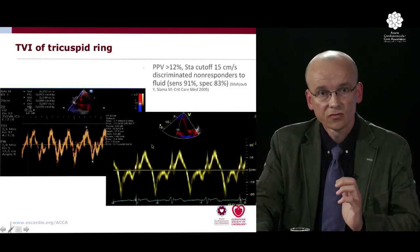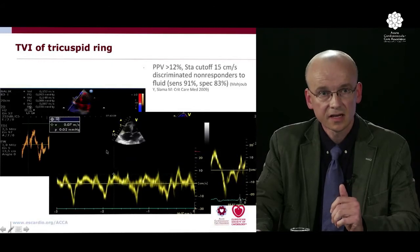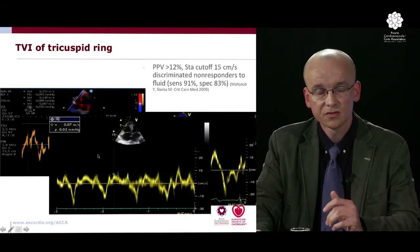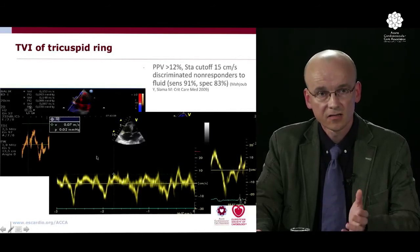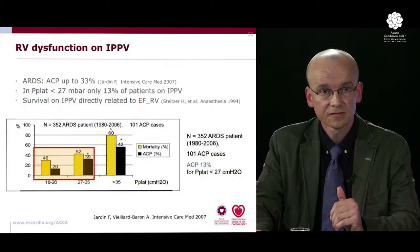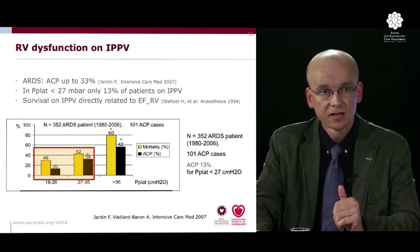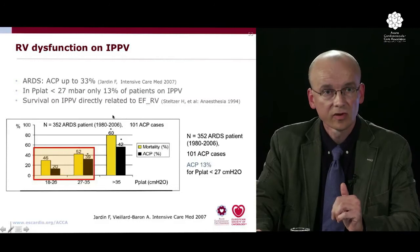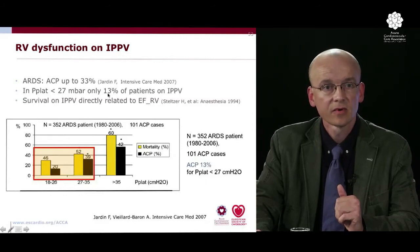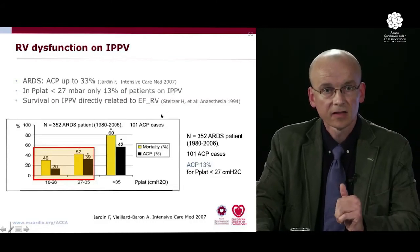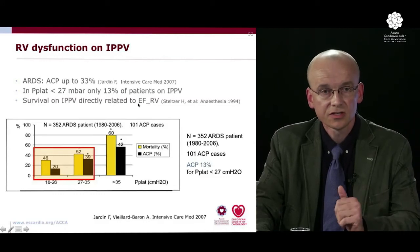Tissue Doppler of the tricuspid ring systolic wave (S') with a cutoff of 15 cm/s can discriminate non-responders to fluid. From a large dataset of mechanically ventilated ARDS patients, reducing plateau pressure below 30, or better below 28 or 27, can substantially reduce the incidence of acute cor pulmonale down to 33% — and below 27, down to 13%. Survival on IPPV, particularly in ARDS patients, is related to the ejection fraction of the right ventricle.